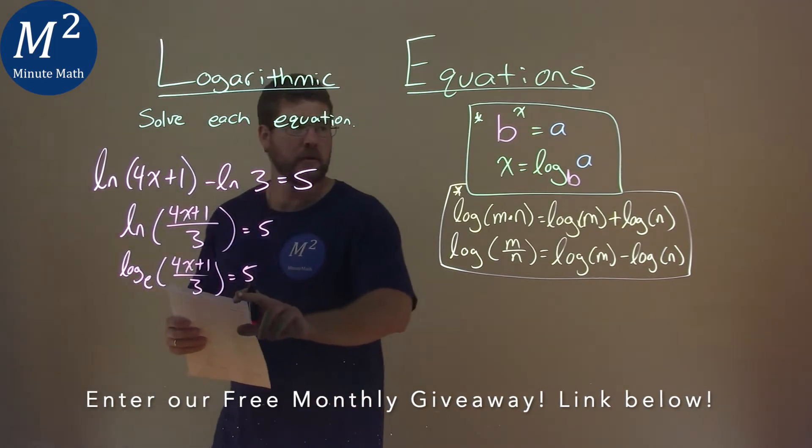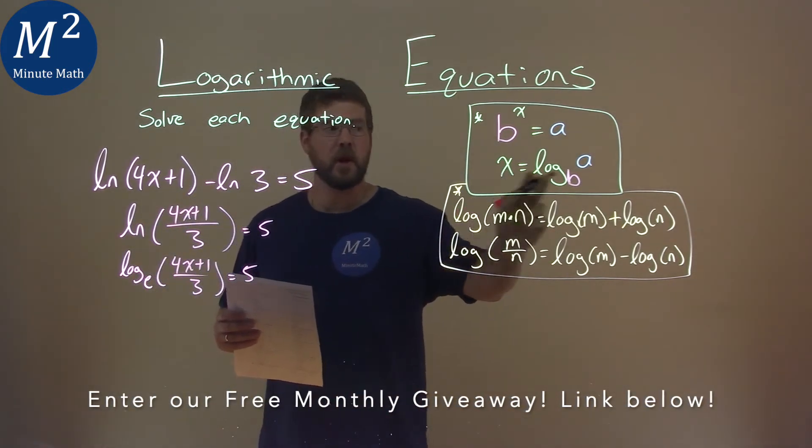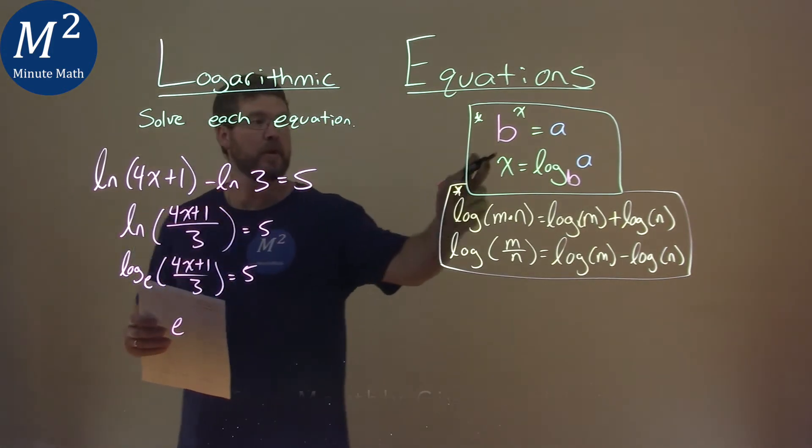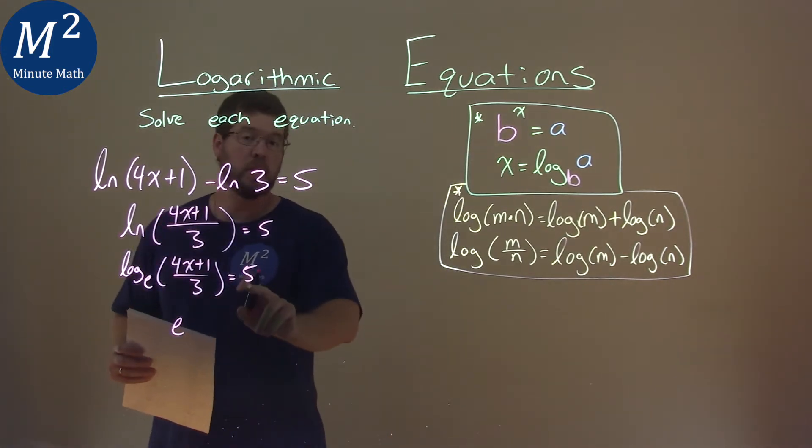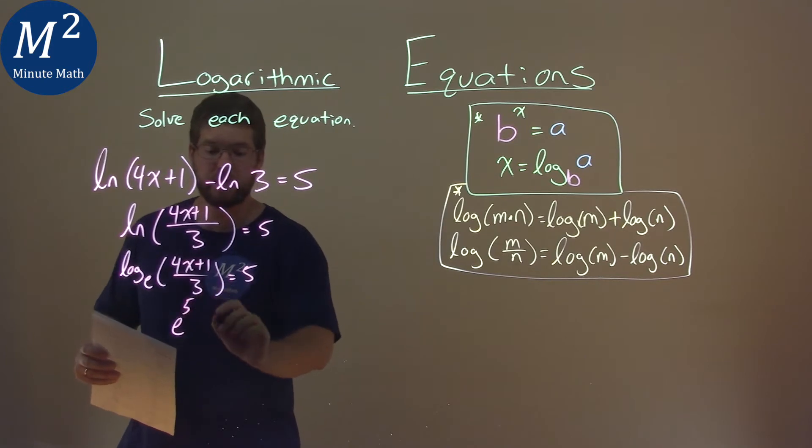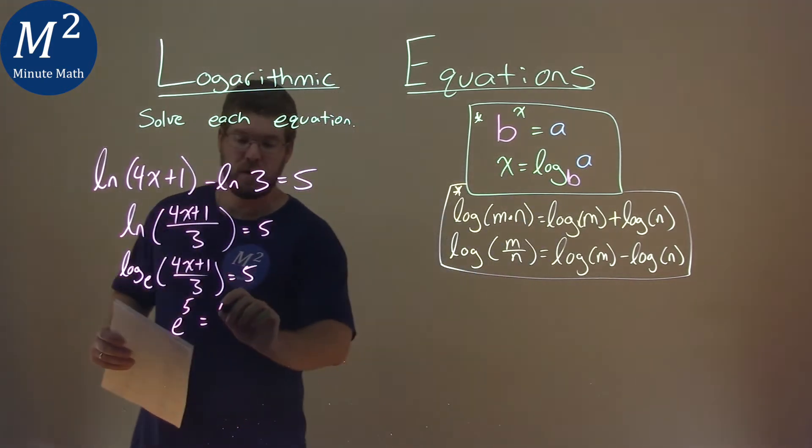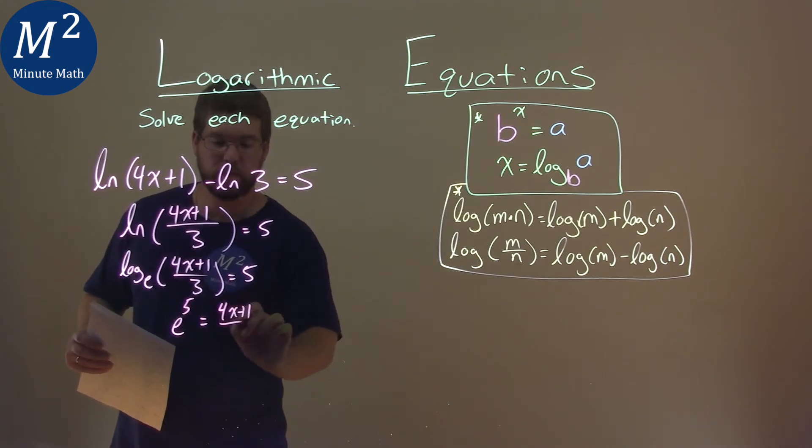From there, we're going to use this formula. Our base is our e value right here. We're going to convert it to up top, and we're raising it to what our logarithm is equal to, the 5th power. And that's going to be equal to what's on the inside, the a value, 4x plus 1 over 3.